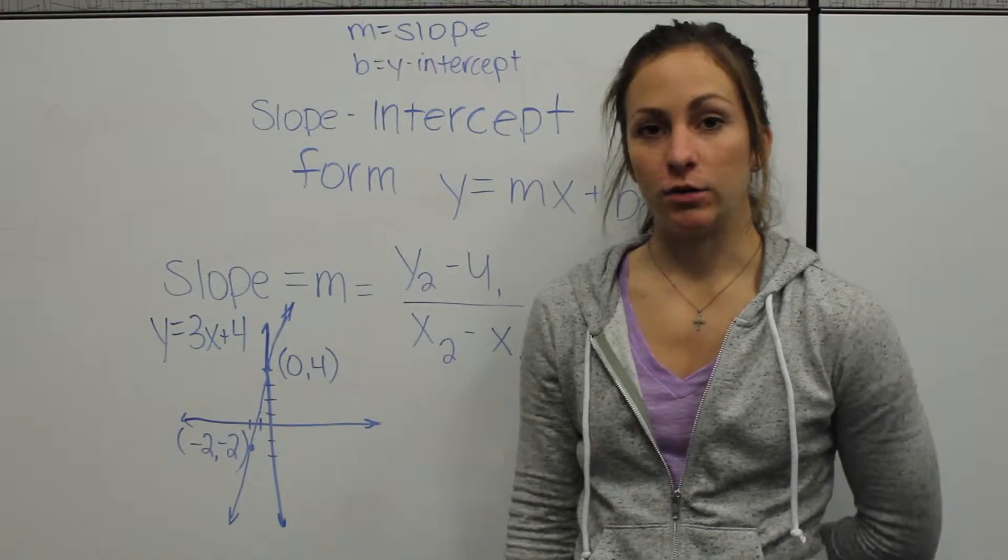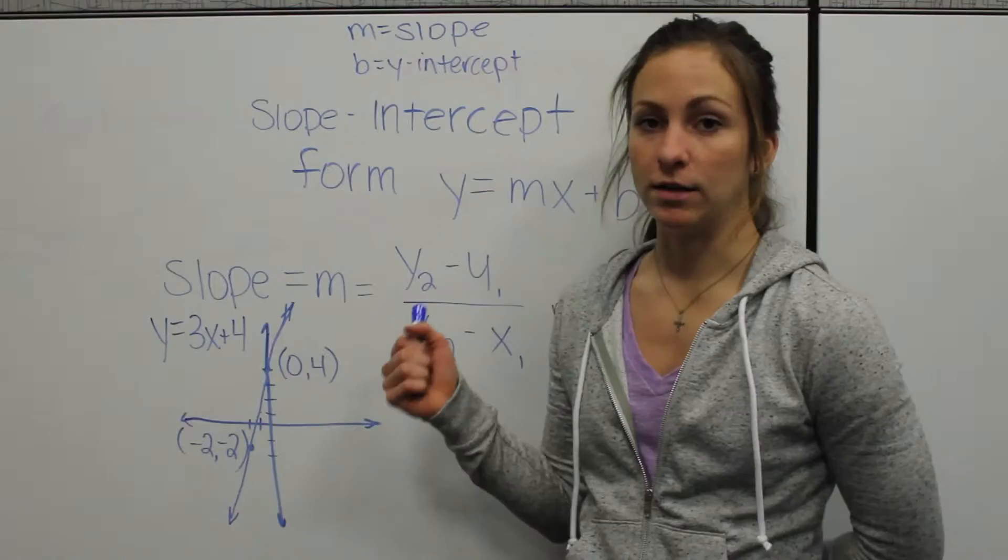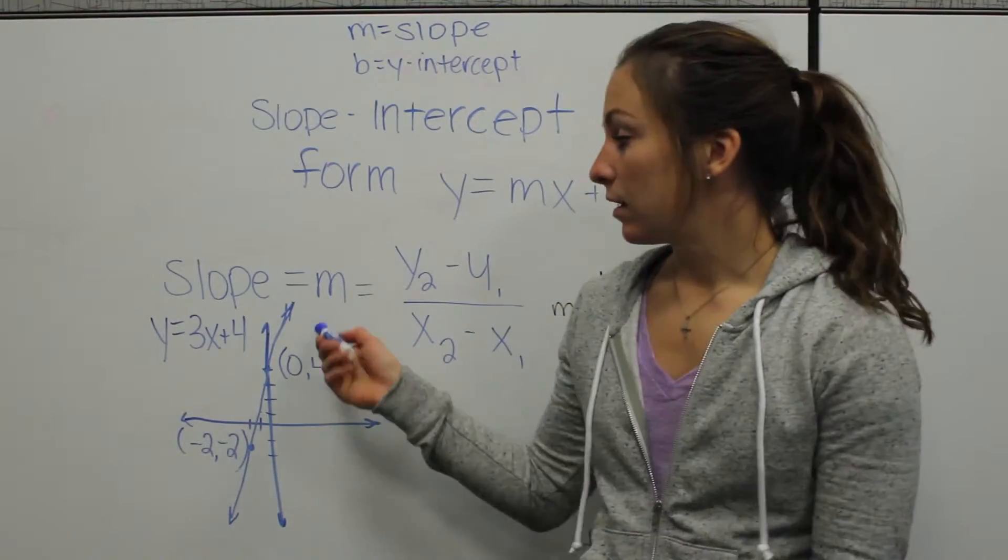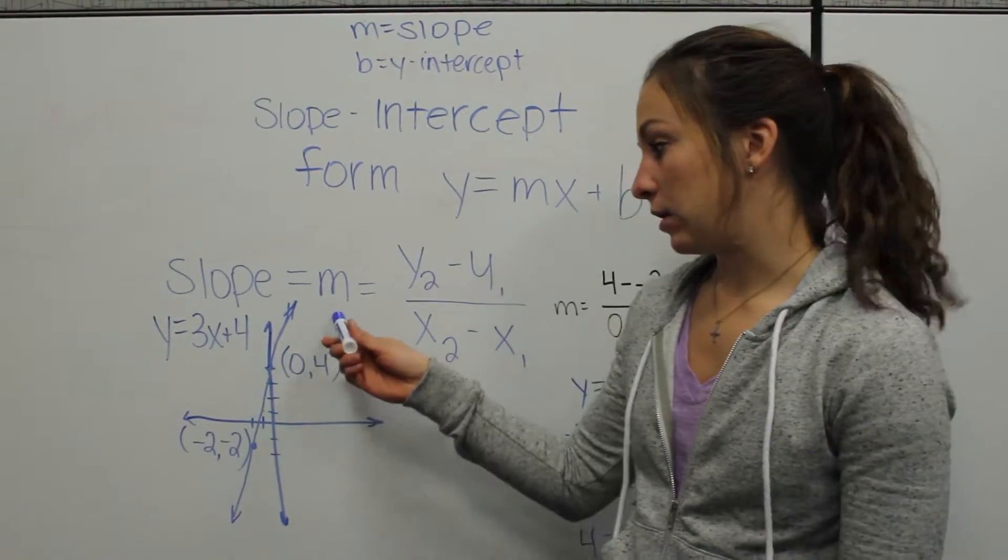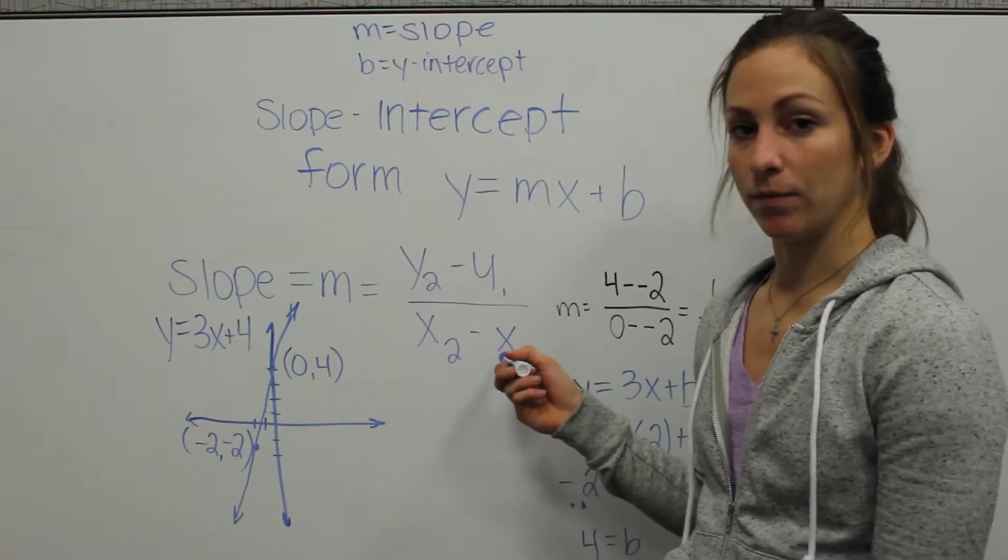In a linear equation or a straight line, you can use any two points on that line to plug in and find your slope. To calculate slope, we use the equation m equals y2 minus y1 divided by x2 minus x1.